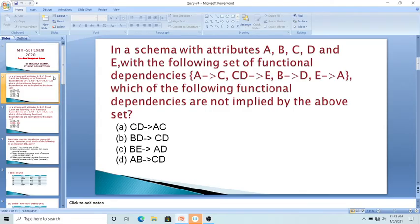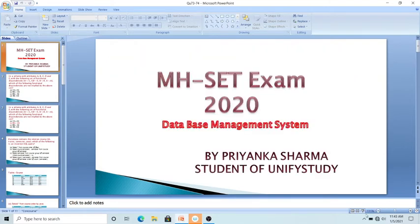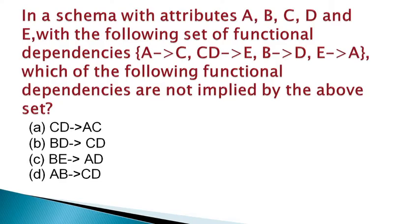Hello friends, I am Priyanka Sharma. Today we learn MHCET exam 2020 questions from DBMS. The question is: in a schema with attributes a, b, c, d and e, the given set of functional dependencies is: a → c, cd → e, b → d, and e → a. Which of the following functional dependencies are NOT implied by the above set? Four options are given below.